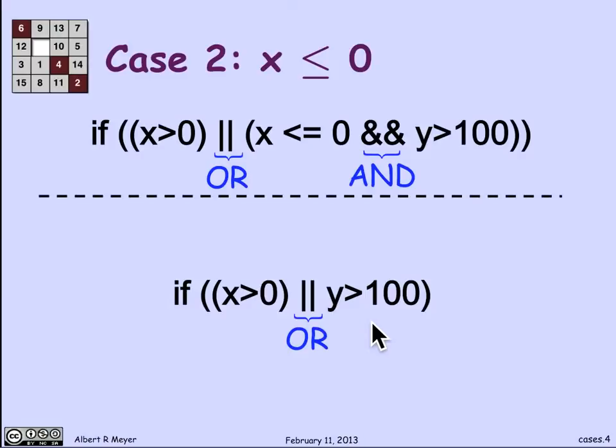The next case is that x is less than or equal to 0. Let's see what happens then. Well, in the top expression, since x is less than or equal to 0, that first expression, x greater than 0, when its evaluator returns false. And same thing in the second expression. The initial test x greater than 0 returns false.